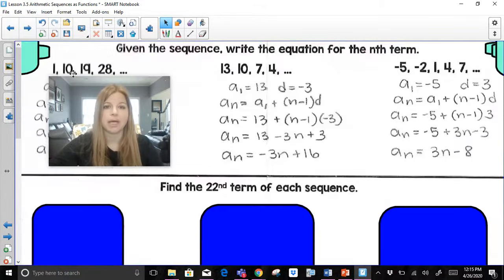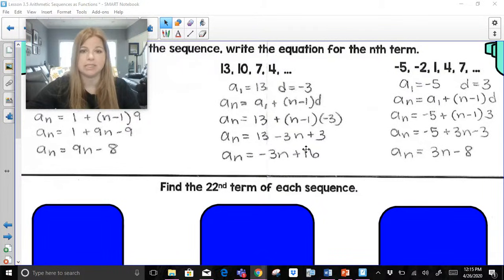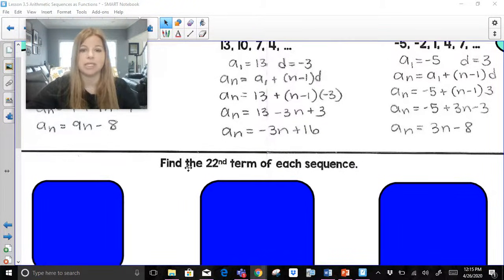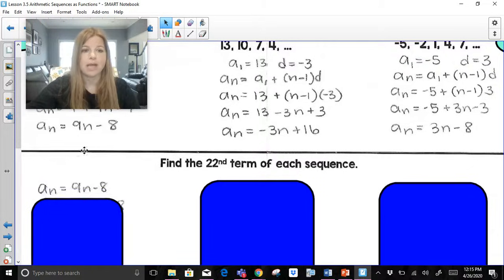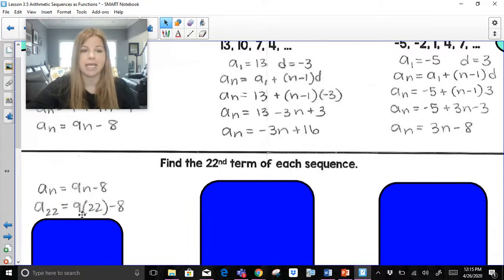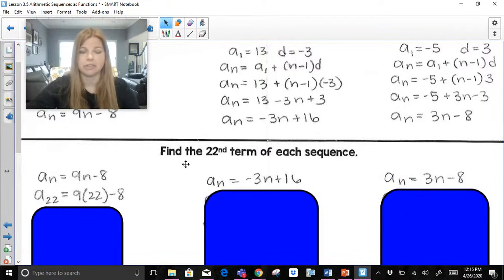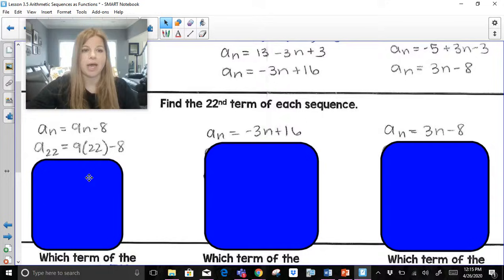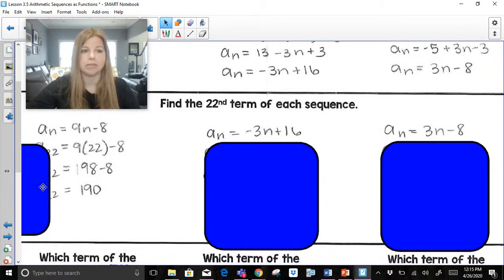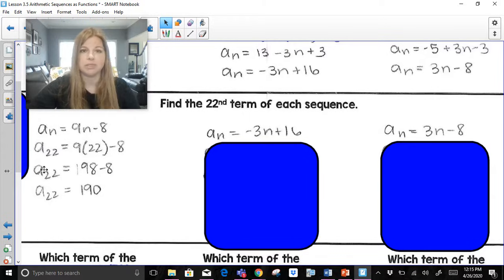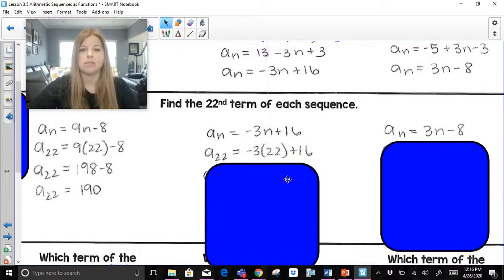So now, if I go back to these equations that I created here from these sequences, and I now say to you, find the 22nd term of each sequence, I would take this equation that I created and I would substitute 22 in for where I see n. So here, if I go ahead and I take those equations from up top here, the ones that we already started to create, and I go ahead and I plug 22 in, I'm really just doing my basic simplifying. And notice what the result is.